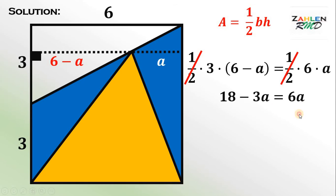Combine similar terms, we get 18 equals 9A. Divide both sides by 9, and we get A equals 2. Now we have the value of A.